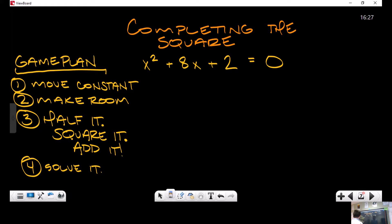First up, part of my game plan: move my constant. What does that mean? I need to get this constant over here. For that to happen, I'm going to subtract 2 on both sides. Now it's going to give me something that looks like this: x² + 8x = -2.